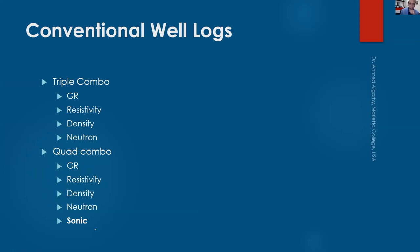For well logging, there is something called triple combo. Triple means three — but we're measuring four things: gamma ray, resistivity, density, and neutron. We call it triple because density and neutron both measure porosity, so porosity counts as one. Gamma ray is one, resistivity is two, porosity is three — that's why it's called triple combo. If you add sonic (dipole sonic), we call it quad combo, meaning four, though there are five items — same reason, density and neutron both measure porosity.